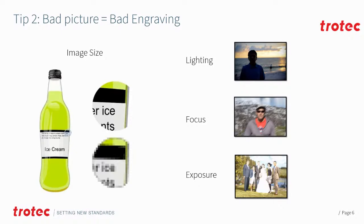So we understand we need to add just enough power to create a nice contrasting mark. Now tip two: a bad picture will result in a bad engraving. It doesn't matter if we set everything up perfectly — if we have a very poor quality image we simply can't get a very good result. Looking at this example, we have the same image and two close-up shots. A high quality image has a lot more pixel data and therefore a lot more clarity.